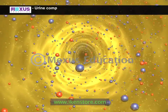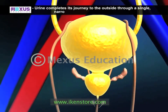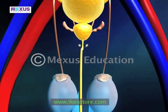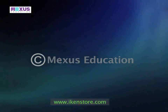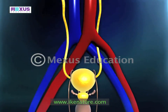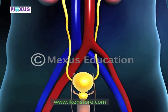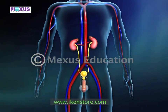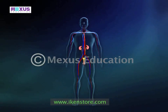Urine completes its journey to the outside through a single narrow tube called the urethra. The human excretory system is thus responsible for the regulation of our body in terms of chemical balances, elimination of wastes and harmful substances, and ultimately our good health.